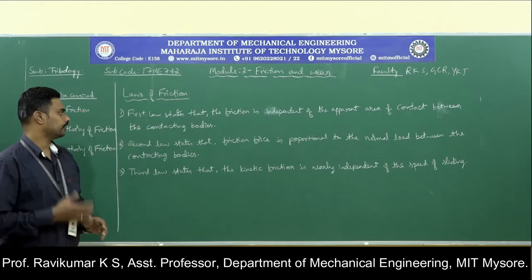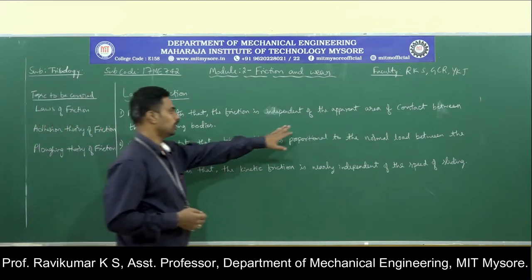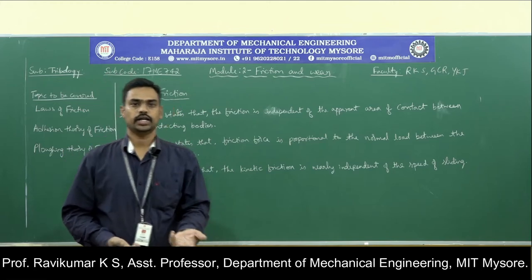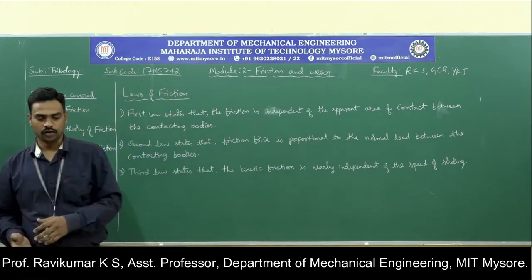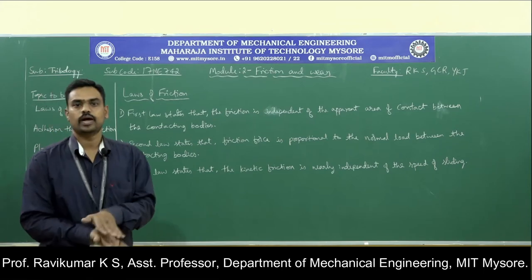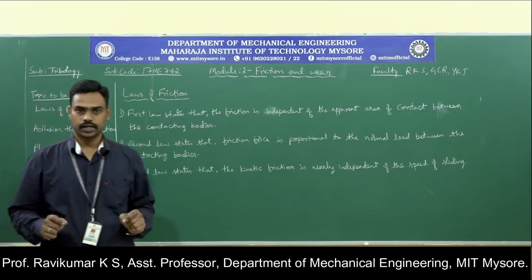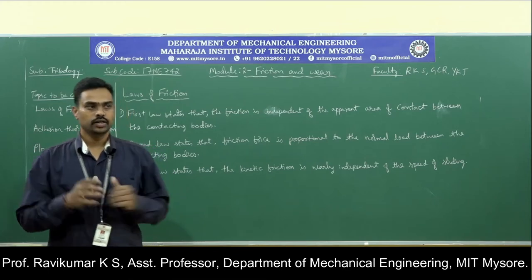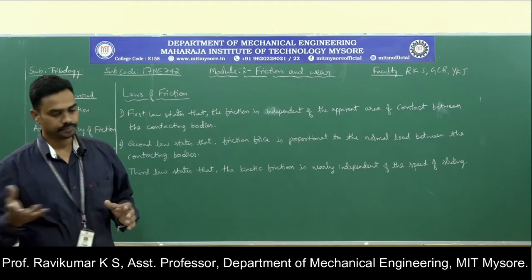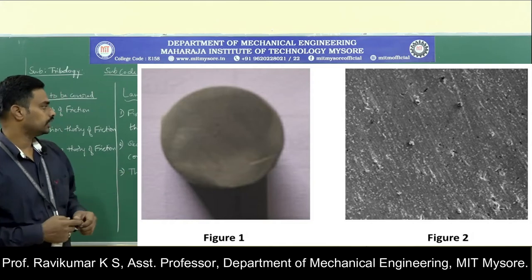Coming to the first law: friction is independent of the apparent area of contact between the contacting bodies. You need to concentrate on the phrase 'apparent area of contact.' What do we mean by apparent area of contact? If there is an apparent area of contact, then there should also be a real area of contact. Whenever a material meets or starts rubbing, there will be apparent area as well as real area of contact, because no surface is finished with a perfect surface finish.